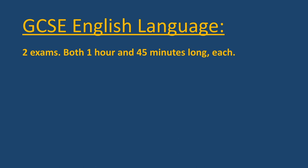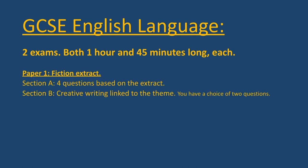GCSE English Language is two exams, both one hour and 45 minutes long. For Paper One you are given a fiction extract. In Section A you answer four questions based on the extract, and then for Section B you complete a piece of creative writing linked to the theme. You have a choice of two questions.